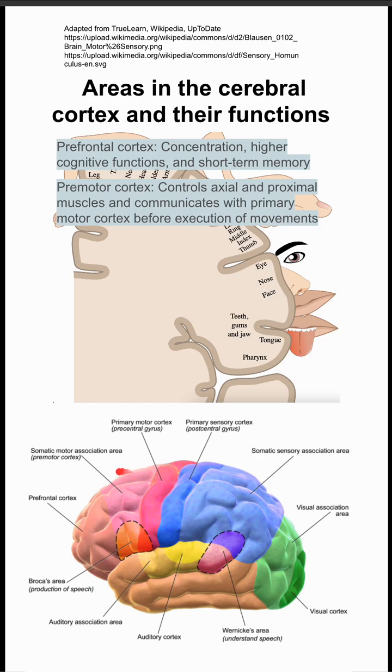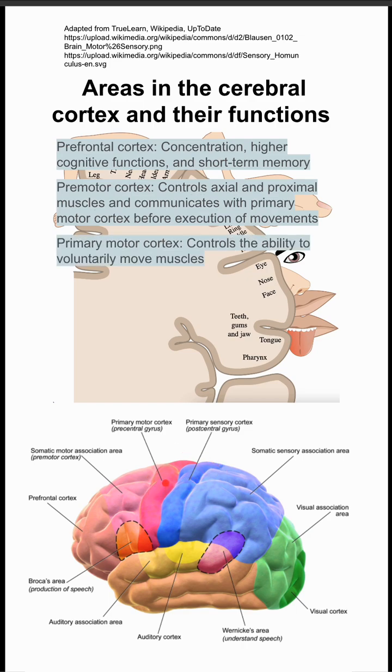The premotor cortex is for control of axial and proximal muscles, and it communicates with the primary motor cortex before execution of muscles.